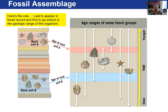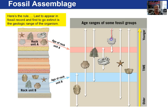In this example, we are going to look at a fossil assemblage in rock unit A and rock unit B, and determine the geologic range of each rock layer. Here is the rule: the last organism to appear in the fossil record and the first one to go extinct will give you the geologic range of the rock layer. Starting with rock unit A, we have a leaf, a starfish with its full range, a fern leaf, a skull, and a scallop.